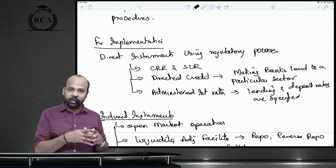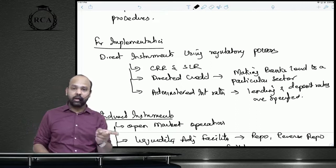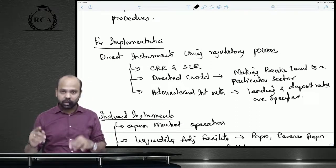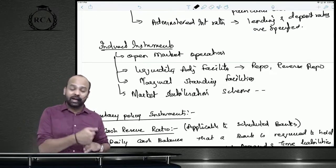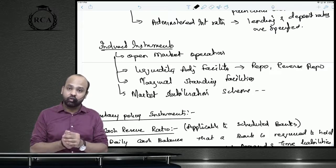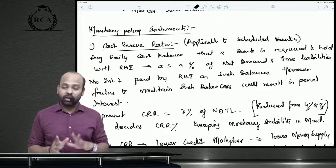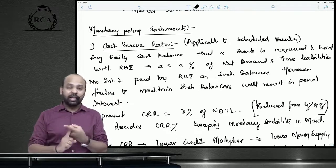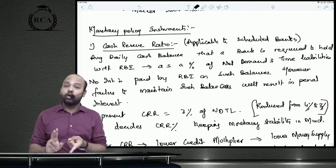Direct regulatory instruments include directly regulating CRR and SLR, directing banks to lend at particular rates, accept deposits at particular rates, or lend to particular sectors. Indirect tools include open market operations, the market stabilization scheme, and the liquidity adjustment facility. There are six main monetary policy instruments: CRR, SLR, liquidity adjustment facility, marginal standing facility, market stabilization scheme, and open market operations.